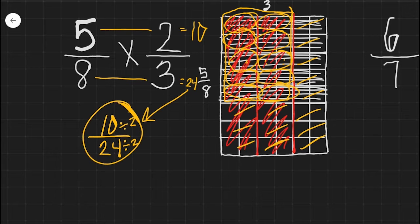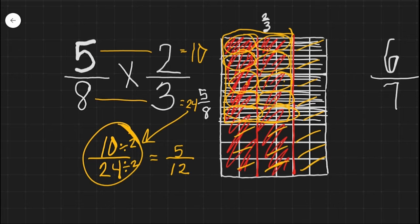Ten divided by two equals five, and twenty-four divided by two equals twelve. So five-eighths times two-thirds gives us ten twenty-fourths, and if we simplify that we get five-twelfths. Now let's do one more together.